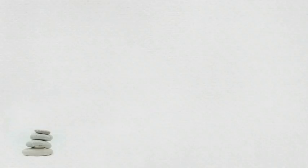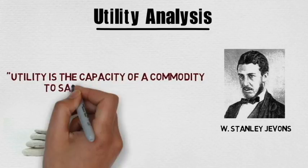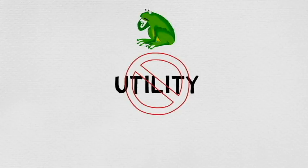We start our journey of understanding consumer behavior with utility analysis. Somewhere between 1800s, an English economist called William Stanley Jevons defined utility as the capacity of a commodity to satisfy human want. However, we'll start learning about utility by knowing what utility is not. Confused? Don't worry, in a while it'll all make sense.